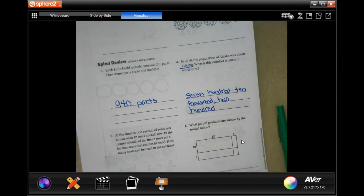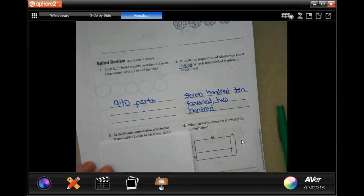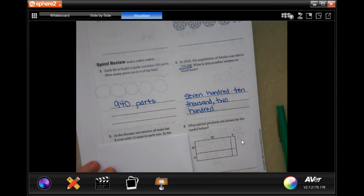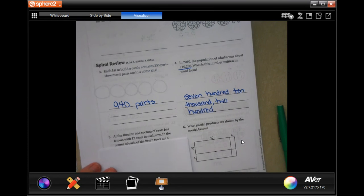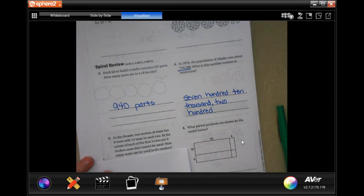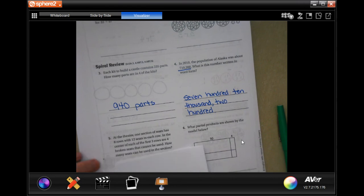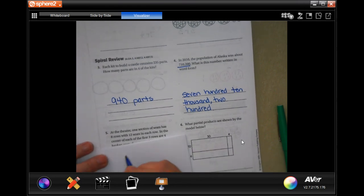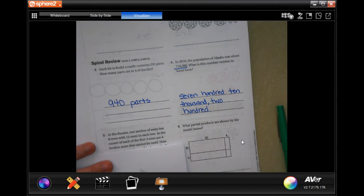All right. At the theater, one section of seats has eight rows with 12 seats in each row. At the center of each of the first three rows, four seats cannot be used. How many seats can be used in this section? So eight rows with 12 seats. We have twelve seats in eight rows.